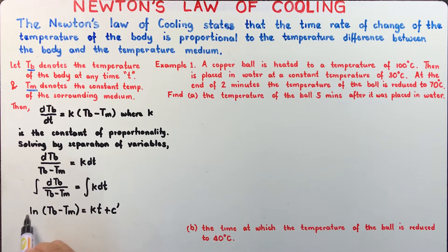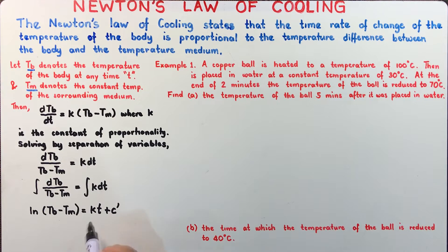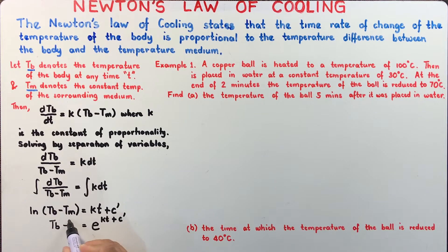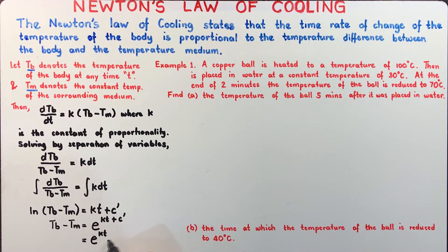Because this is a logarithmic equation, we can transform it into its equivalent exponential notation. The natural log expression becomes an exponent of e, so we have e to the power KT plus C prime, which is equal to T sub B minus T sub M. We can factor this as e to the power KT times e to the power C prime — and adding these exponents confirms the equivalence.